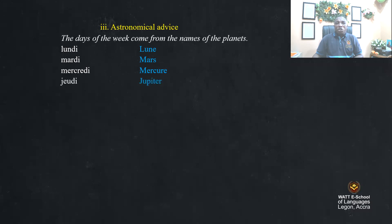Jeudi comes from Jupiter. Vendredi comes from Vénus.